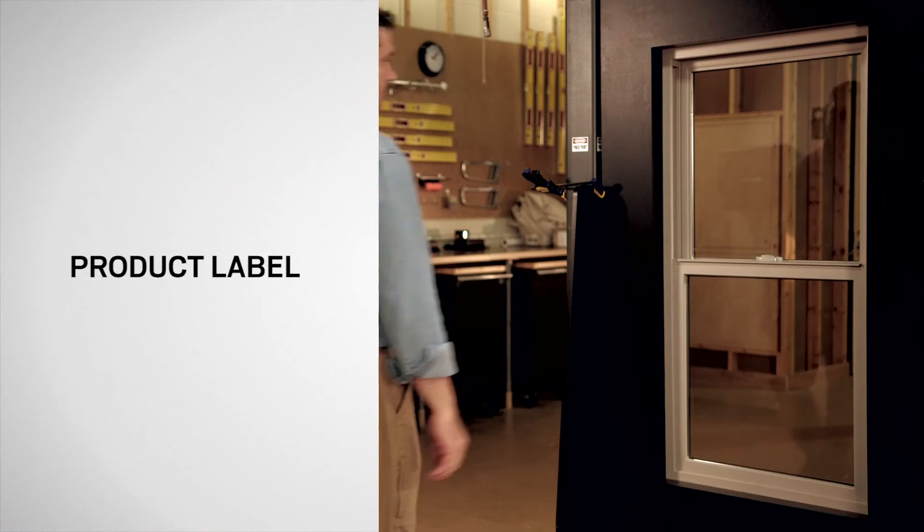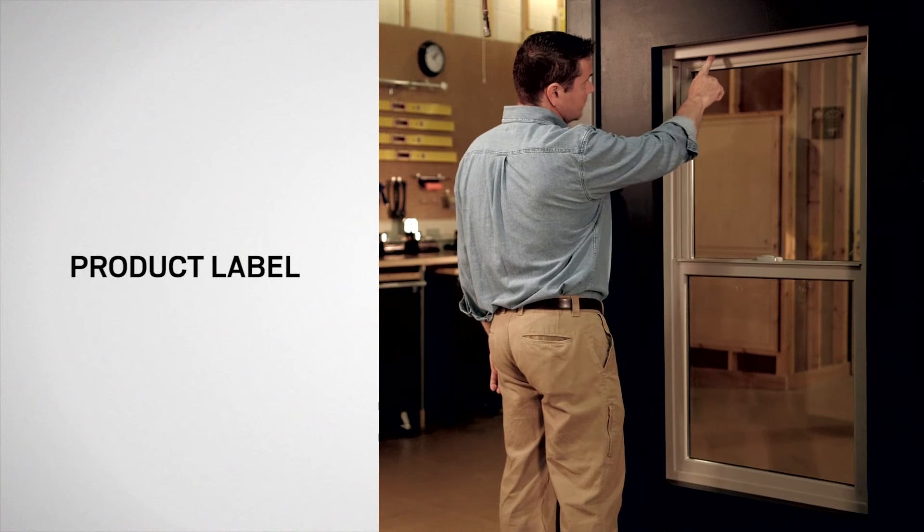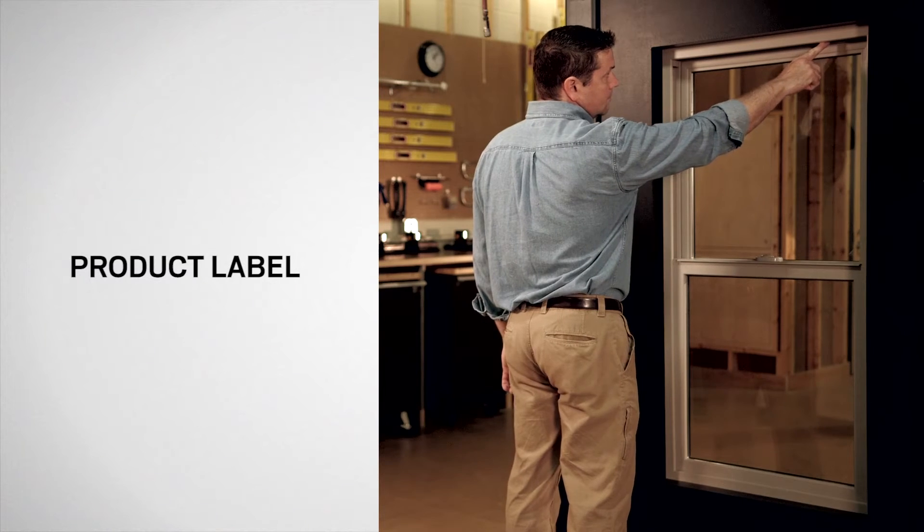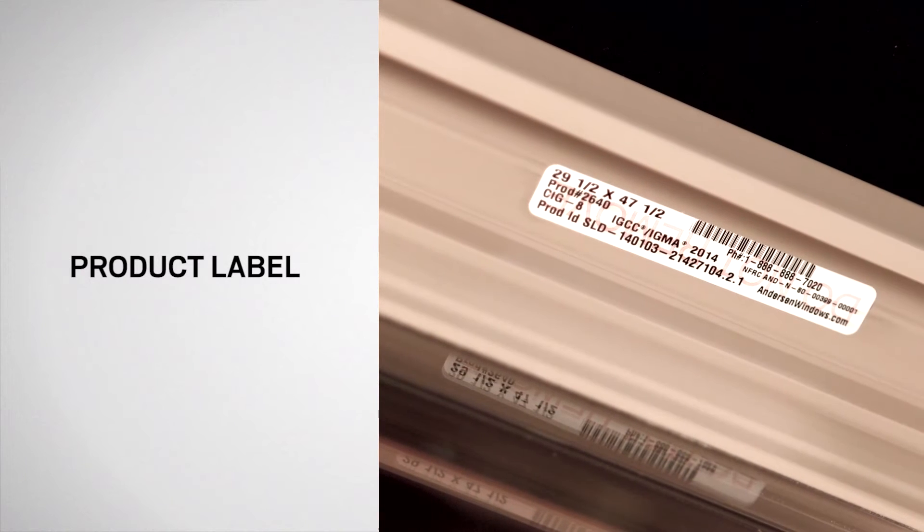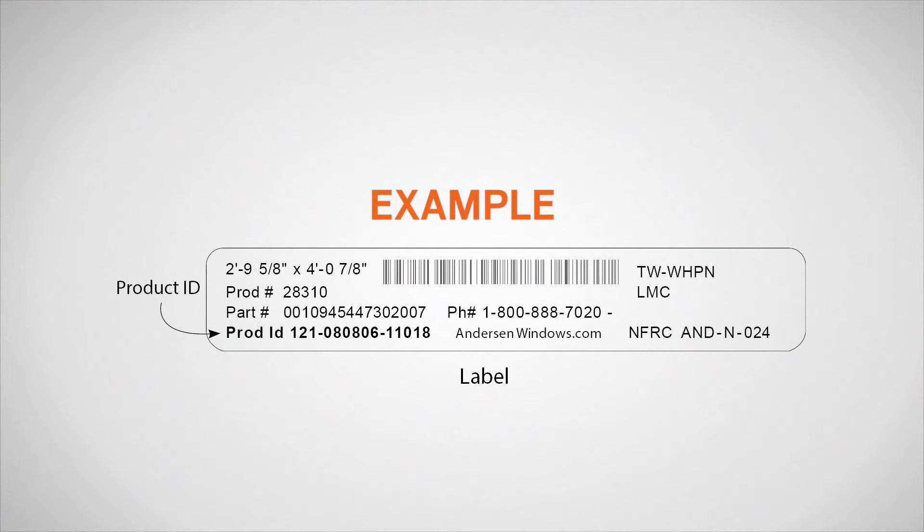From the interior, every 100 series single-hung window has a permanent label containing a unique identification number. The label on a single-hung window is located on the head jamb. The product ID number may be up to 14 digits long.